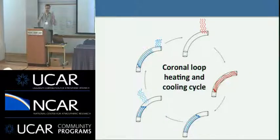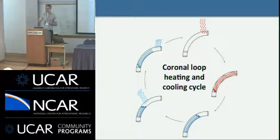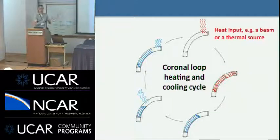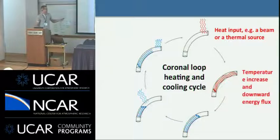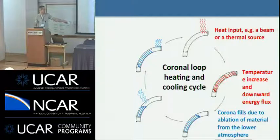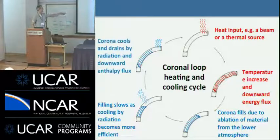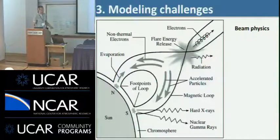Regardless of how a coronal loop receives its energy, it undergoes the same kind of process we call the heating and cooling cycle. Once energy is deposited into the loop, the temperature increases and you get downward energy flux. The corona fills up because material in the lower atmosphere gets heated. The filling eventually slows down because as the corona gets denser, radiation takes over and it starts to lose energy. Eventually all energy input ceases and the corona starts to cool by radiation, and material begins to drain. Then the whole thing basically starts again.